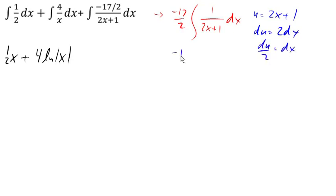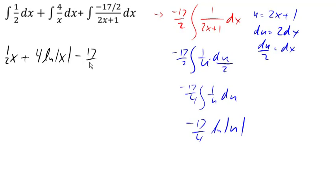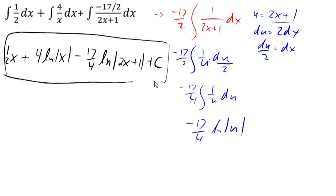Making that substitution, this becomes integral of 1 over u du over 2, because the 1 over 2x plus 1 is 1 over u, dx becomes du over 2. We can take out that extra over 2, multiply it in with 17 halves. Integral of 1 over u will be natural log of u. Back substituting gives us what we were looking for, natural log of u which was 2x plus 1 plus C. There is our general antiderivative for the rational expression we started with.